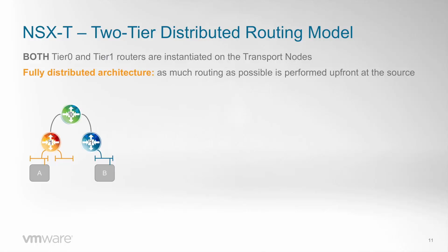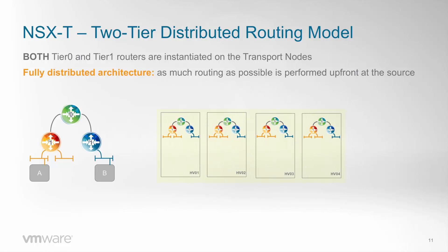NSX-T also has two tiers of routing, but now they are both distributed across ESXi and KVM hosts. They are called Tier 0 router, which could be thought of as the provider router, and Tier 1 router, which could be thought of as the tenant router. If we look at the physical topology, both routers sit in-kernel in all transport nodes. Now, if VM A from the orange tenant wants to talk to VM B from the blue tenant, communication will stay on the host. If you think about containers or OpenStack projects, this is a very efficient approach that allows for better performance and higher scale.